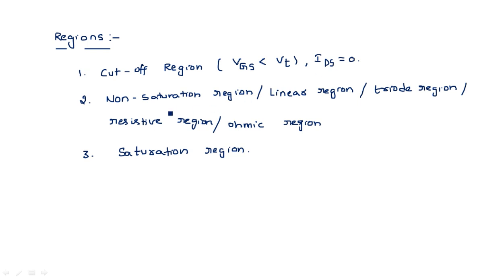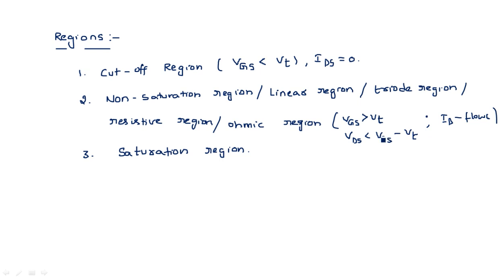In the non-saturation, linear, triode, resistive, or ohmic region, VGS is greater than VT and VDS is less than VGS minus VT. Under these conditions, current ID flows. The channel is created because VGS exceeds the threshold, and IDS is proportional to the applied voltage VDS.